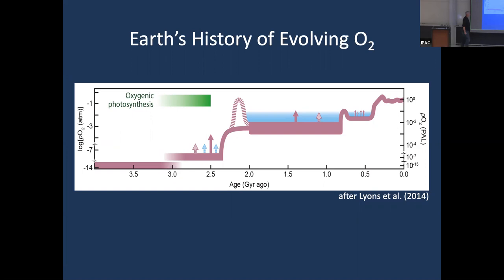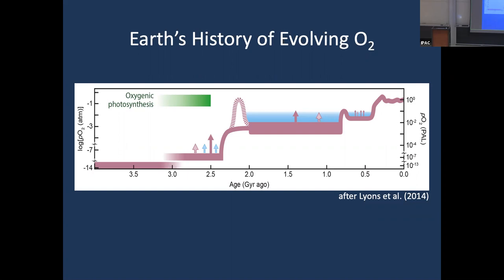Over time we've been refining our oxygen curve — it still has the basic two steps, published in 2014, but it gets more texture as we apply more approaches. The Great Oxidation Event is now very well constrained by mass-independent sulfur fractionation at about 2.3–2.4 billion years ago. I'll also show data for the second jump in oxygenation around 800 million years ago. But first I want to give you a flavor of one of my favorite time periods: the 'Boring Billion,' named for its very flat carbon isotope expression.